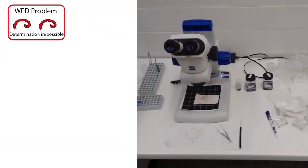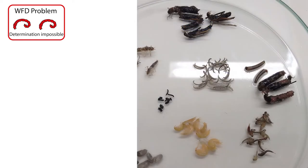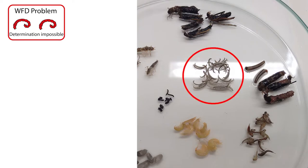Macroinvertebrate specimens collected in routine monitoring are usually identified with morphological characteristics. However, this is problematic as some taxa lack good morphological characteristics to identify specimens on species level, making taxa identification quite time-consuming, or taxa are only identified to a coarse taxonomic level like, for example, chironomids.